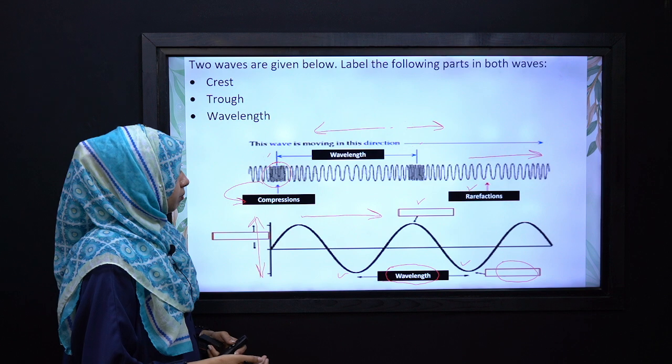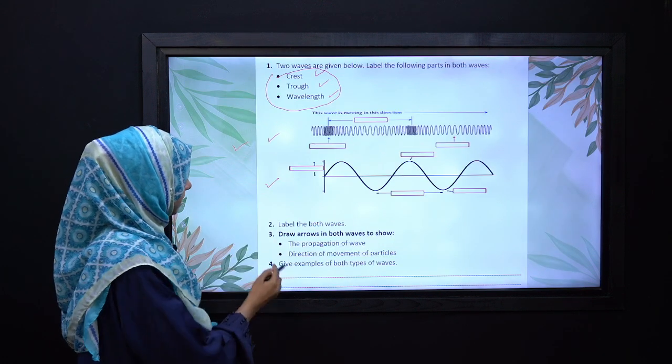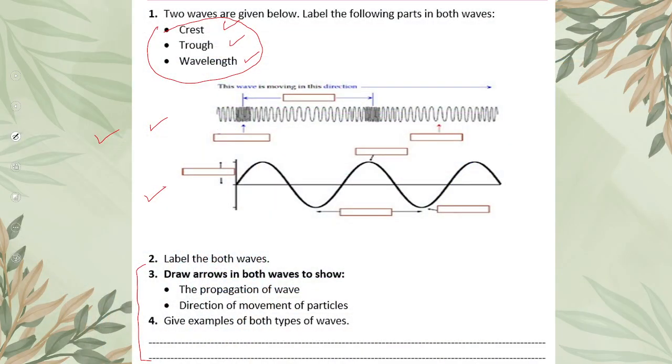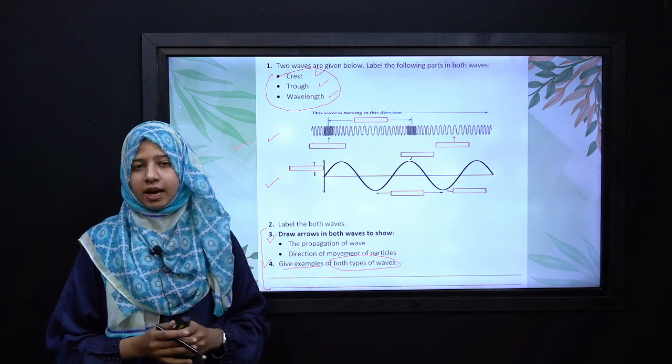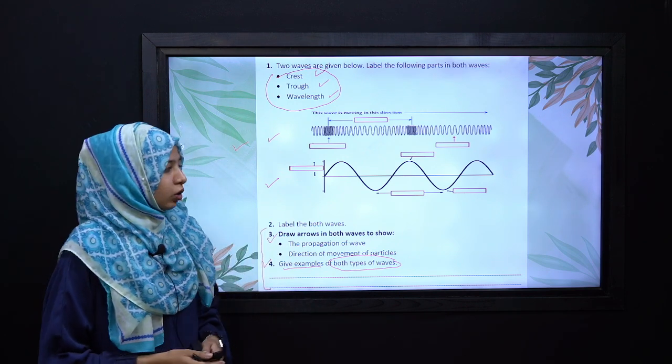In addition, if you look at your previous skill, the last part is to draw the arrows, which we have done. And the last part is to give examples of both types of waves. To solve this last part, you have to write at least two examples of both types of waves: transverse waves and longitudinal waves.